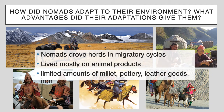They also had limited amounts of grain and millet, and some pottery to store grains. They traded leather goods — leather hides, armor, and clothing — with people who traversed their lands on their way from one large civilization or empire to another.